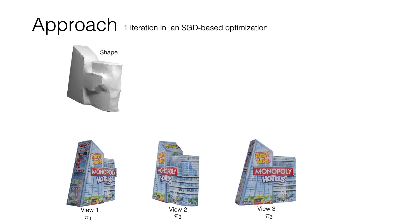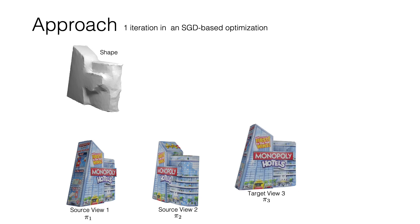We now describe the first iteration in our SGD-based optimization in more detail. For simplicity, we assume only three views. At the beginning of the iteration, we have a shape estimate as a mesh with vertices and faces, three views, and corresponding camera pose estimates pi1, pi2, pi3. We consider two of these as source views and the third as a target view.